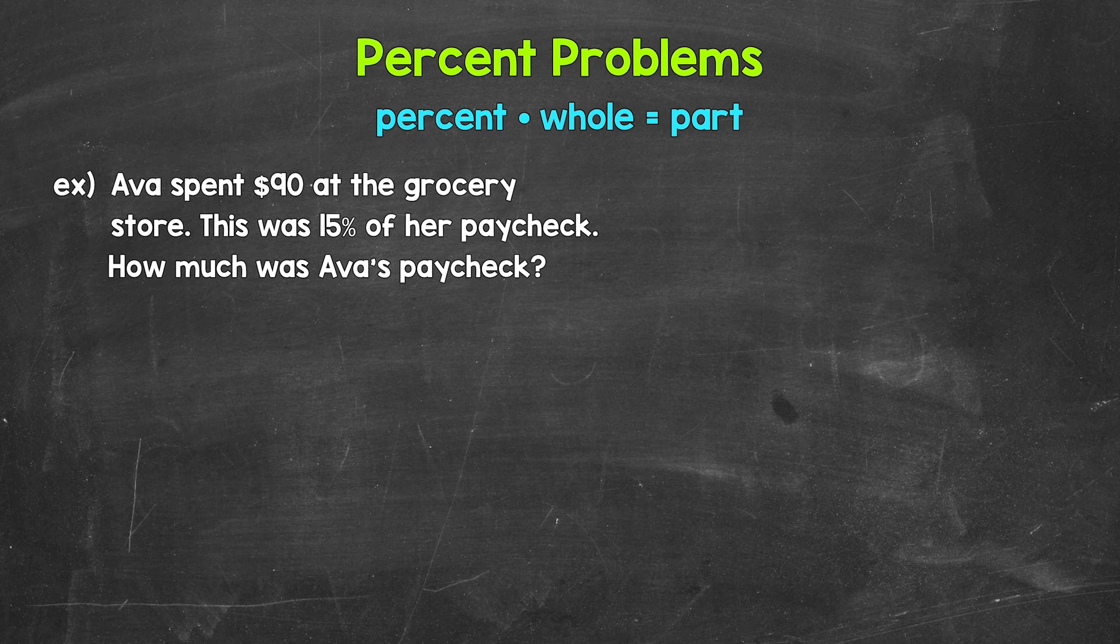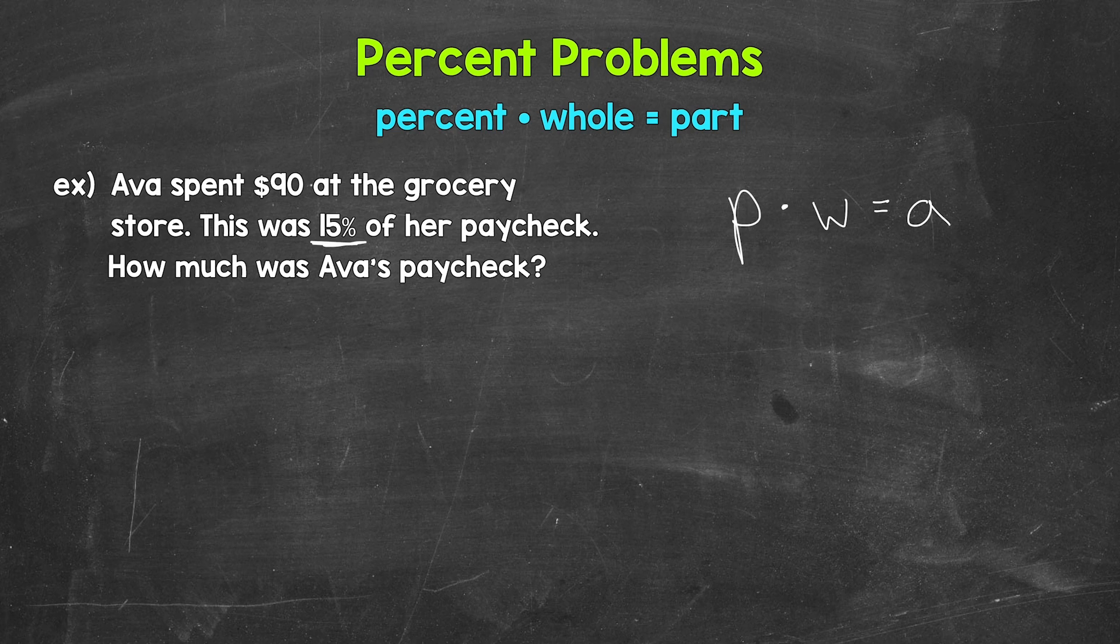Let's come to the side here and work through this. Our equation, P for the percent times W for the whole equals A for the part. Now we need to identify the different parts of the equation and plug in. Let's start with the percent. Well, 15% is our percent here.